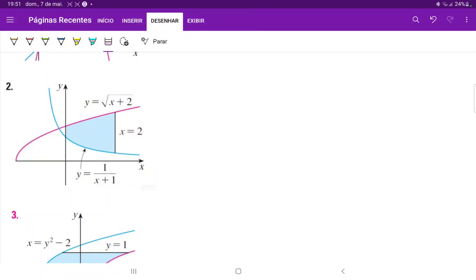For this one, I want to find this area that's shaded in blue. Now we do know that the area beneath the curve is given by the integral, so we just need to think about how we're going to set up our integral.